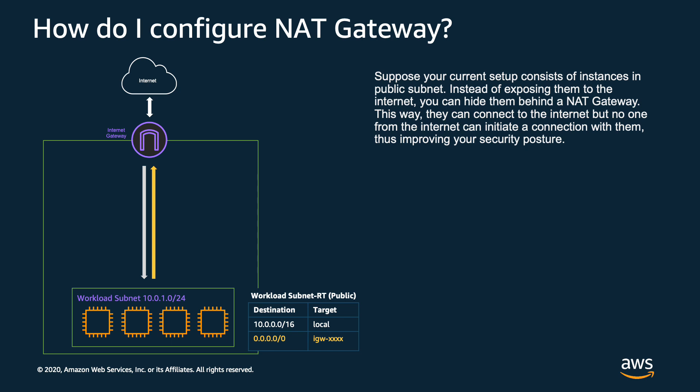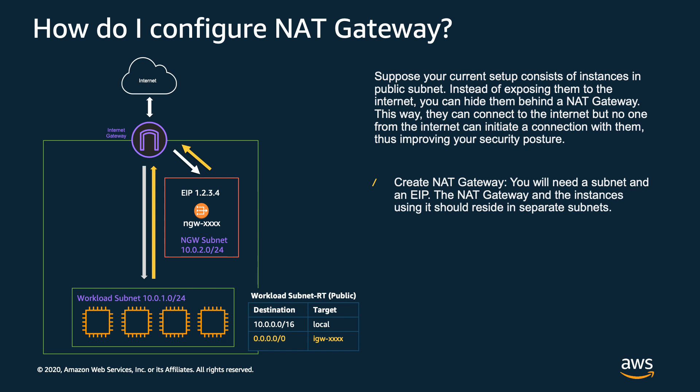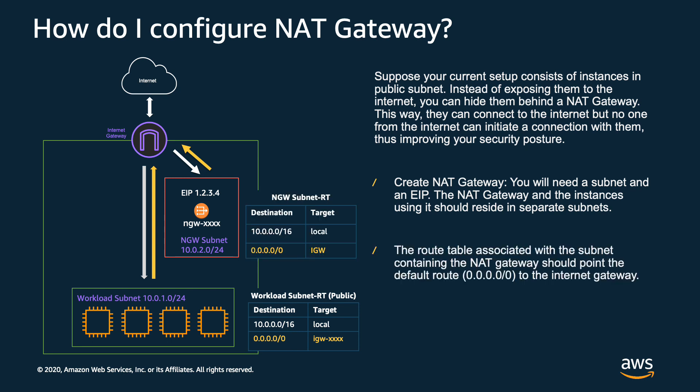To accomplish this, you would first create a NAT gateway. This NAT gateway will need a subnet and an EIP or elastic IP address. The NAT gateway should also reside in a separate subnet from your workloads. The route table associated with the subnet that has the NAT gateway needs to have its default route point to the internet gateway.